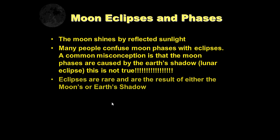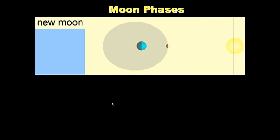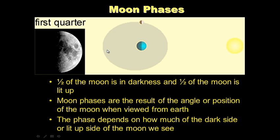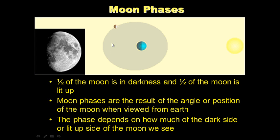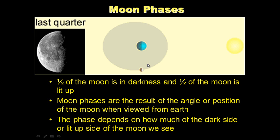Eclipses are rare and only happen maybe once, maybe twice a year. Eclipses are rare and are the result of either the moon or the earth's shadow. The phases of the moon, however, which we see several times a month, almost every evening or so, have nothing to do with the moon or the earth's shadow. Here's an animation showing moon phases. Notice as the moon goes around the earth, half of the moon is in darkness and half of the moon is lit up.